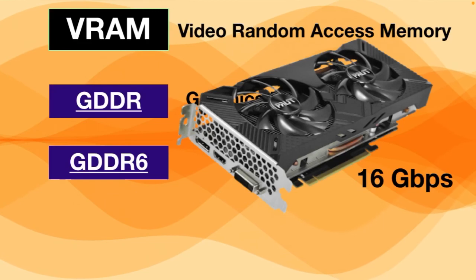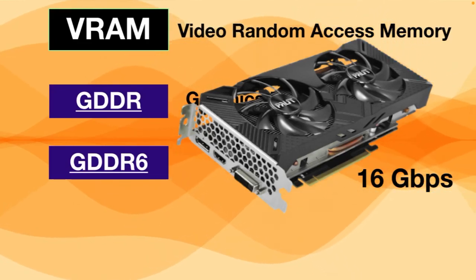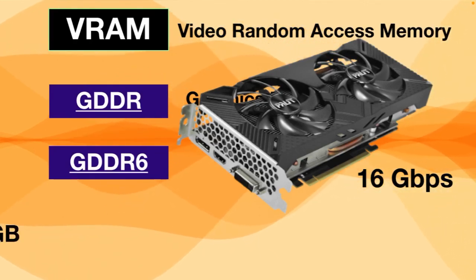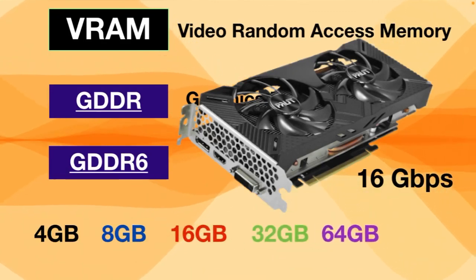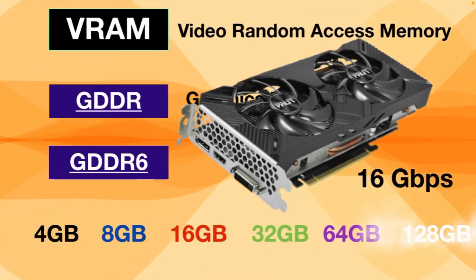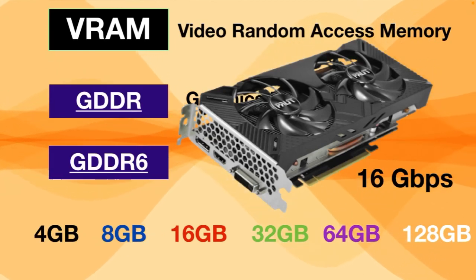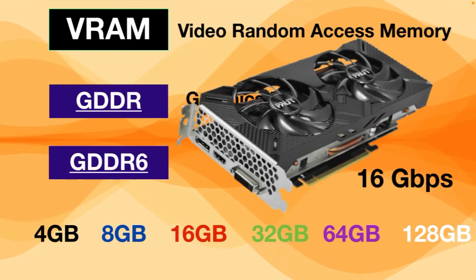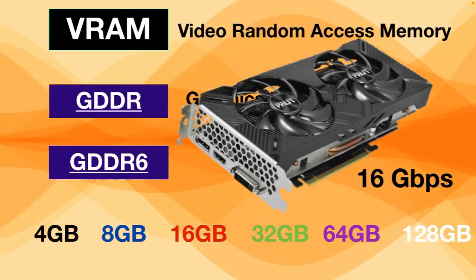When you buy a computer, you have several options of RAM capacity: 4GB, 8GB, 16GB, 32GB, 64GB, and 128GB. It's all up to you — if you have the budget, go for the larger one. That was all for today's video; if you liked it, please hit the subscribe button.